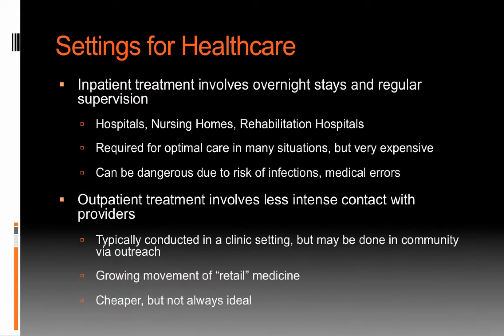There are different kinds of settings for health care. In general we break out settings as either inpatient or outpatient. Inpatient settings involve overnight stays and regular ongoing supervision of care — places like hospitals, nursing homes, or rehabilitation hospitals. For many situations this is required for optimal care, but it's of course very expensive, so we want to use it only when necessary. Inpatient settings can also be dangerous — hospitals carry risks of infections and medical errors. Many doctors will tell their patients they want them in and out of the hospital as quickly as possible.